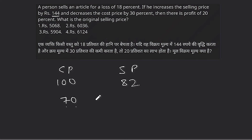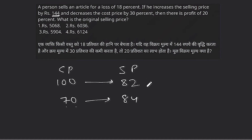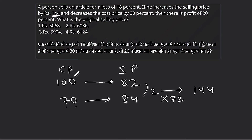Working through the percentages: at 18% loss the selling price is 82% of cost price. After adjustments, with 20% profit on 70% cost price, the new selling price is 84% of original cost price. The difference in selling prices corresponds to the rupees 144 increase, giving us 2% equals 144, so cost price equals 72 times 2.